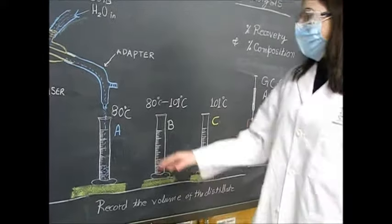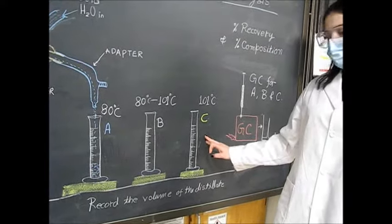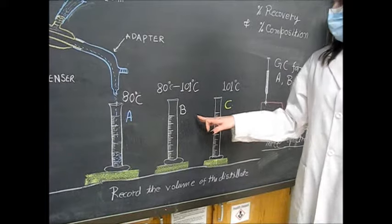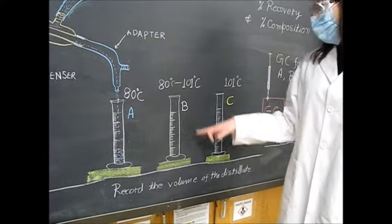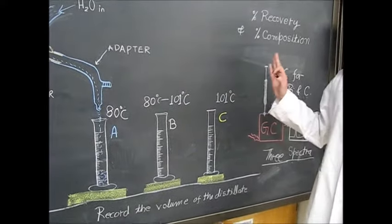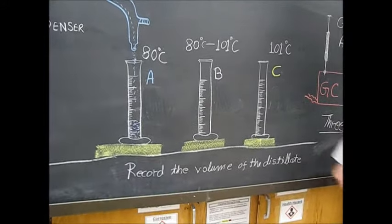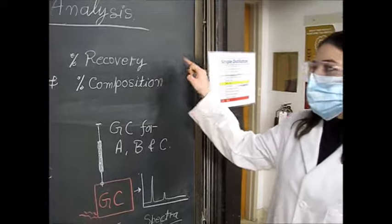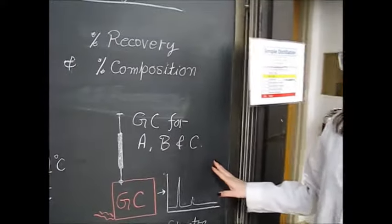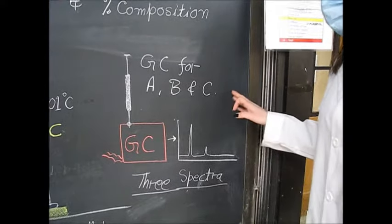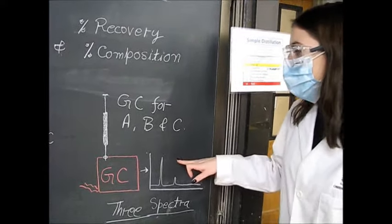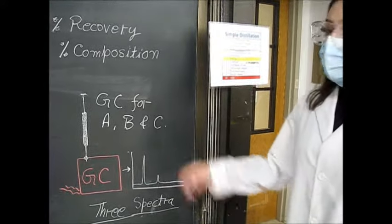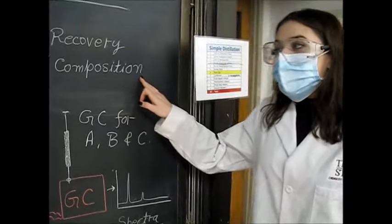In this lab we will collect three fractions. Fraction A will be collected from the beginning up until about 80 degrees Celsius. Fraction B will be collected from 80 to 100 degrees Celsius. Fraction C will be collected from 100 degrees Celsius and beyond. It's important to record the volumes of distillate collected to analyze percent recovery. Analysis also includes percent composition, which we will determine using gas chromatography. You will collect a spectrum for all samples A, B, and C.